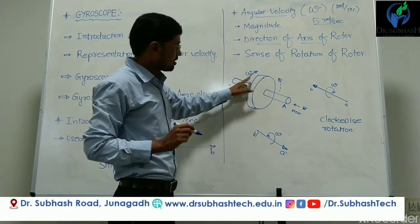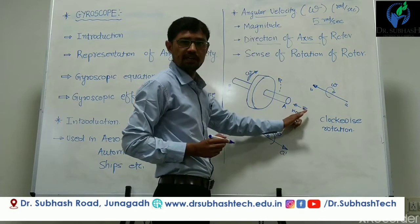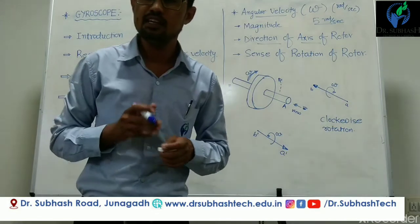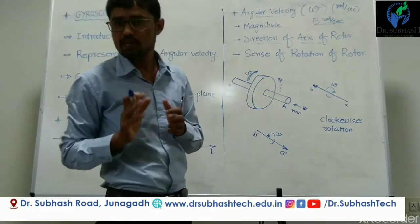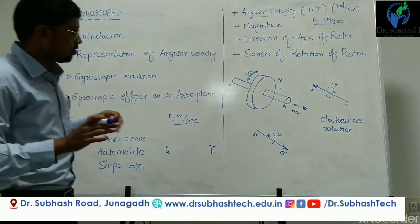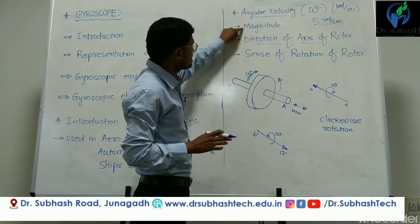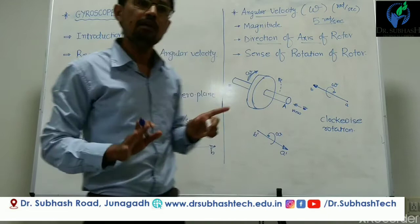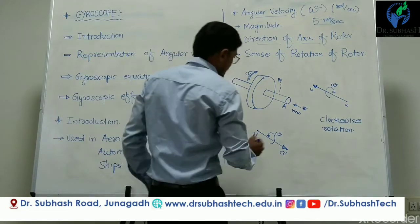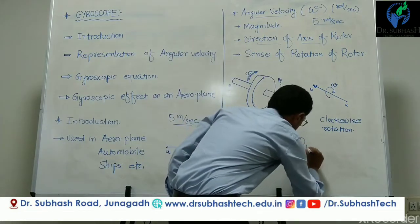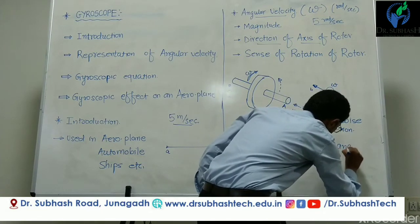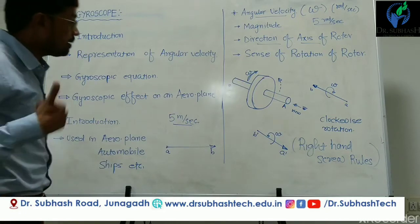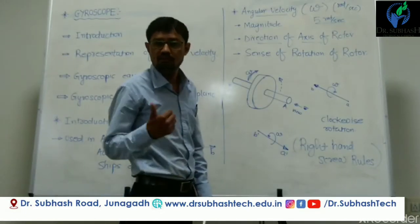So if we have these three things — magnitude, direction of axis of rotor, and sense of rotation — then we can represent an angular velocity by a vector. To do so, we are going to use the right-hand screw rule. By using the right-hand screw rule we can represent an angular velocity by means of a vector.